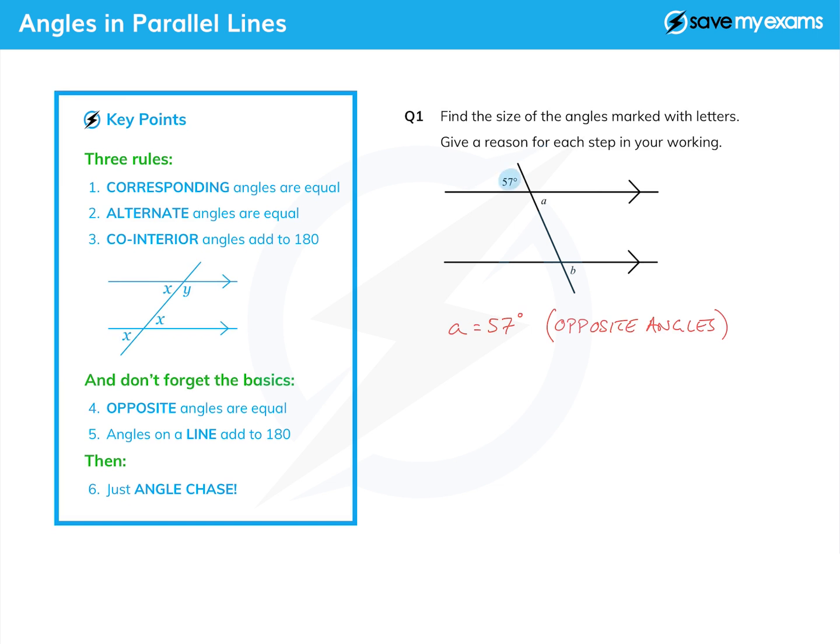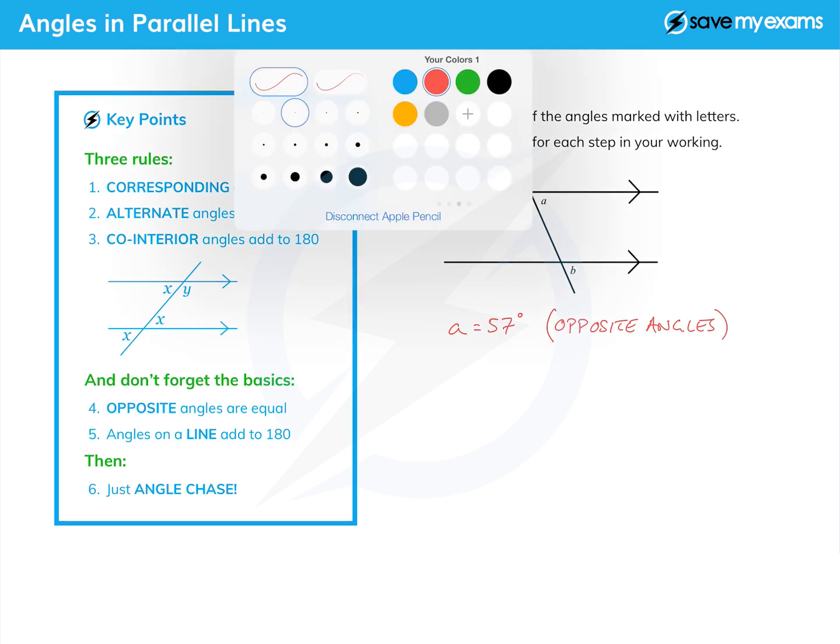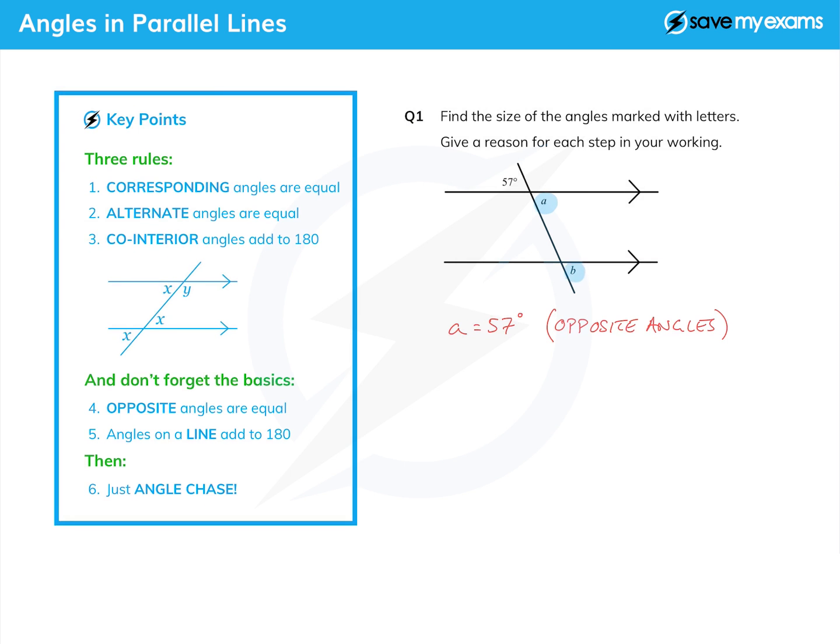And then how do we find b? Well, whichever way you want to do it, do you think of it as an F and then remember it's corresponding angles, or do you just see that they correspond to each other? So they are equal because they're corresponding angles. So b is also equal to 57, and here is my reason: corresponding angles are equal. And that is as simple as that.